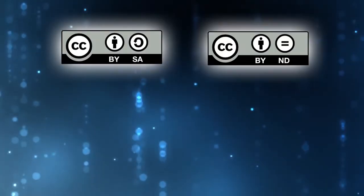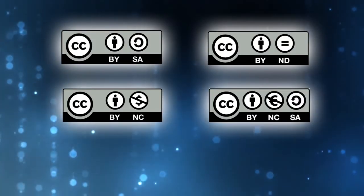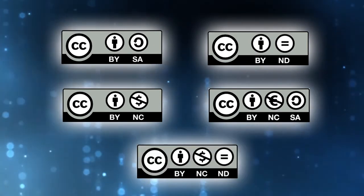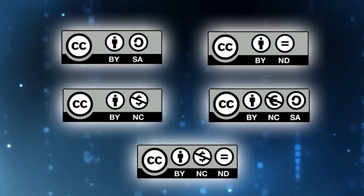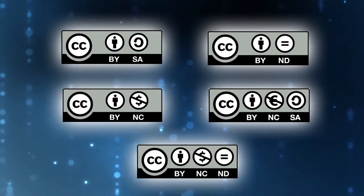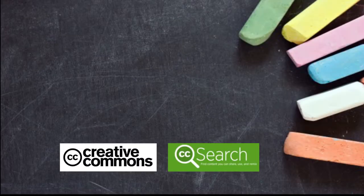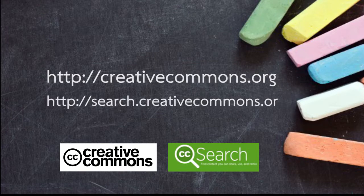You may also see other license types such as BY-SA, BY-ND, BY-NC, BY-NC-SA, and BY-NC-ND. To help you with this, I have put together two web links: the first one is creativecommons.org, and the second one is search.creativecommons.org.